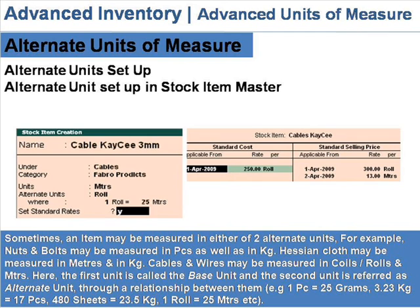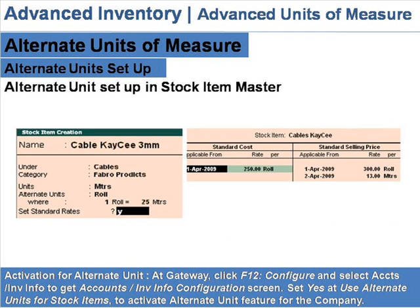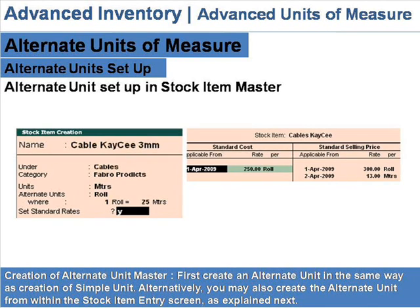Alternate units setup: to activate alternate unit at the gateway, click F12 to configure and select Accounts Info and Inventory Info. In the configuration screen, set 'Yes' at 'Use Alternate Units for Stock Items' to activate the alternate unit feature for the company.